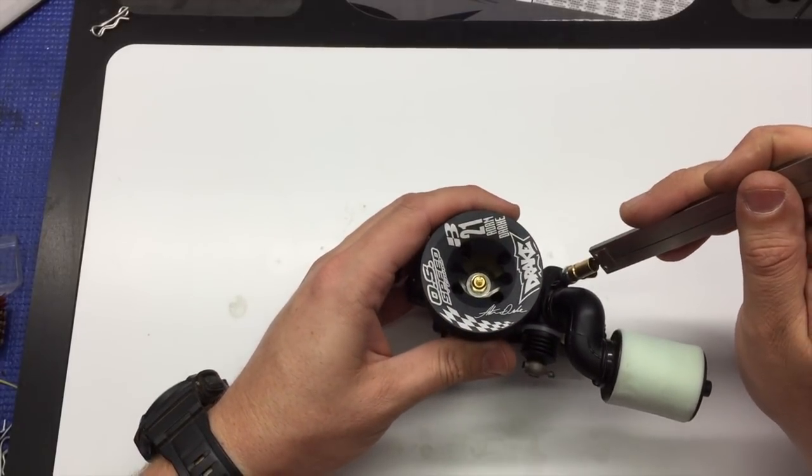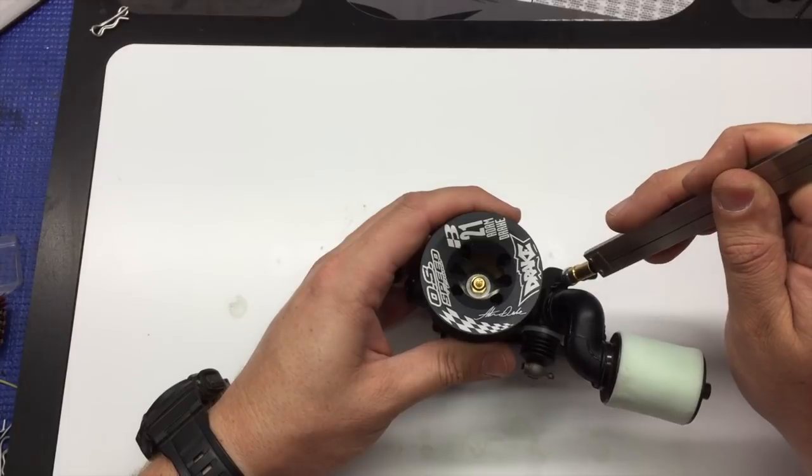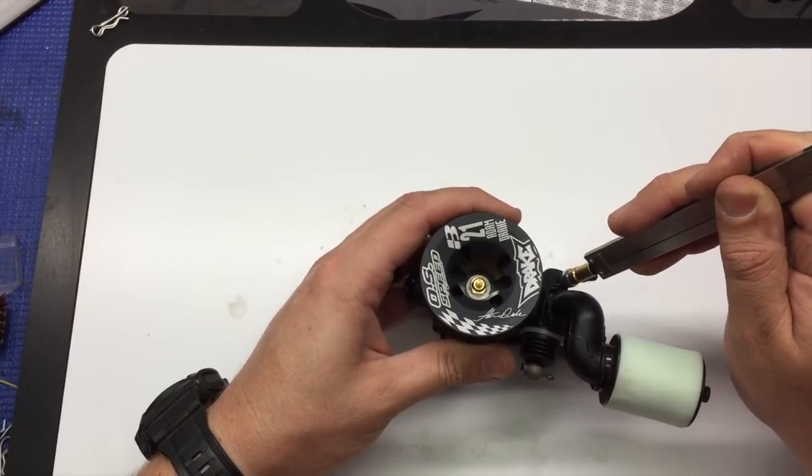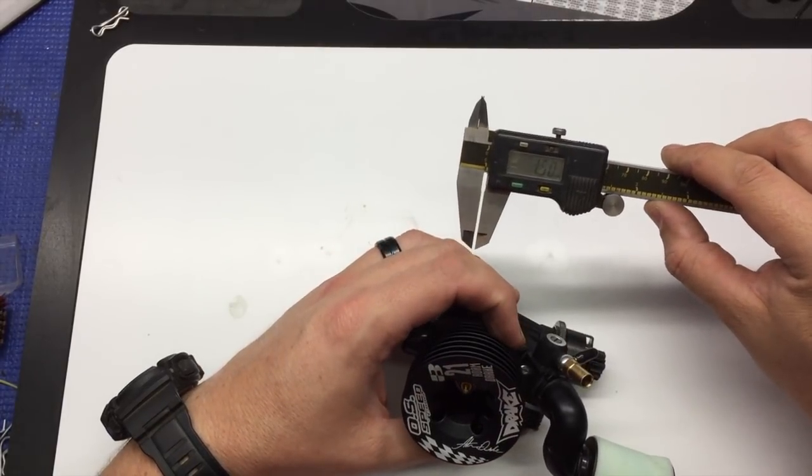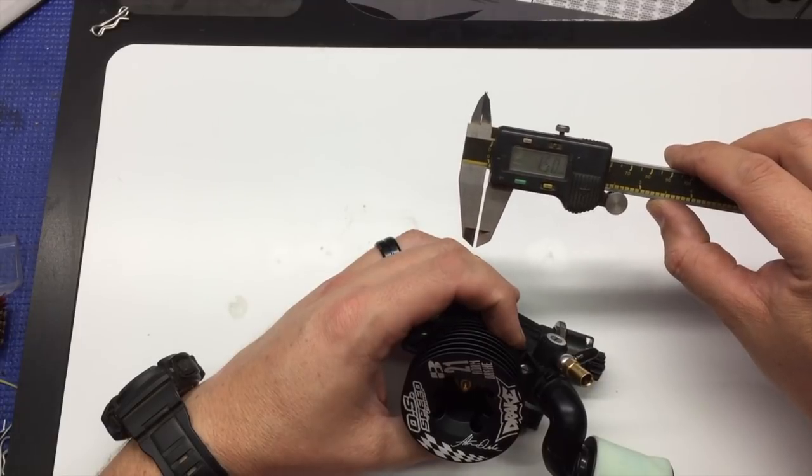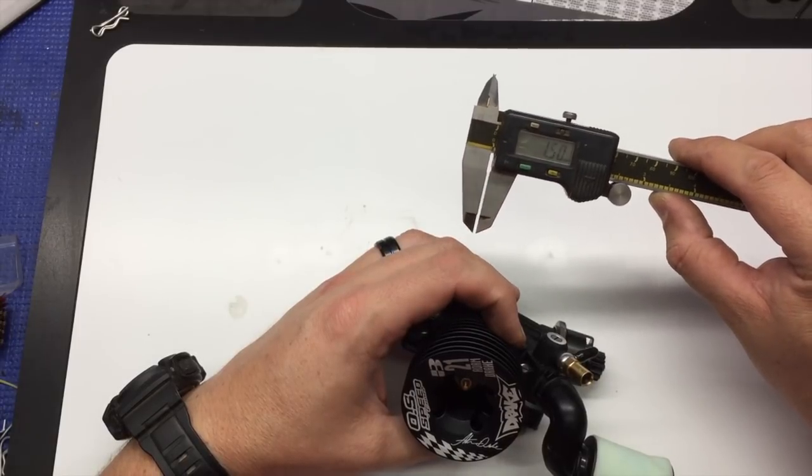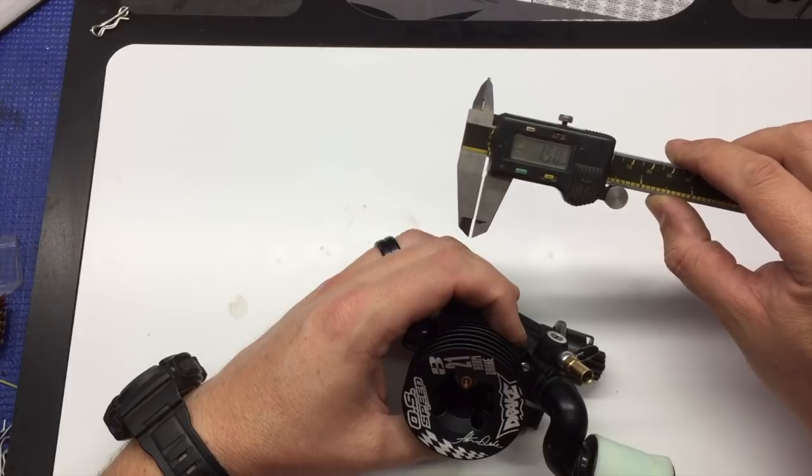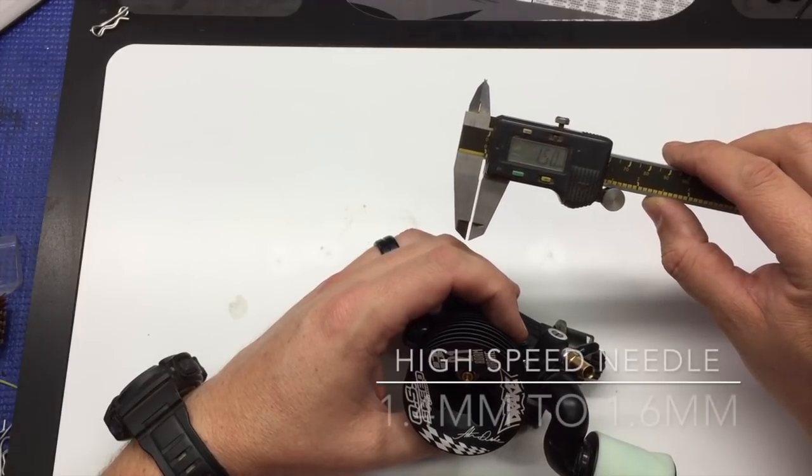For the high speed needle, you'll go ahead and do the same process. And I'm at 1.5 millimeters. So I would say safe setting for this would be in the 1.4 to 1.6 millimeter range.